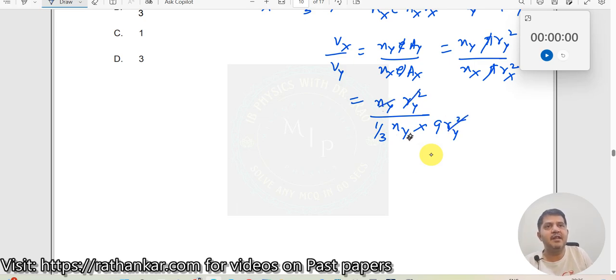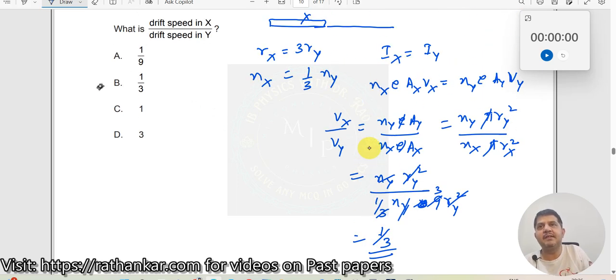R_y square, n_y, n_y goes away. What I am left out with? This should be one by one third into nine. Three ones are, three threes are. This should be equal to one by three. So v_x by v_y should be one by three and there is B.